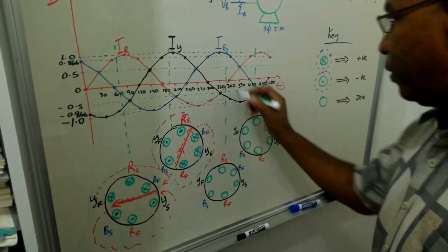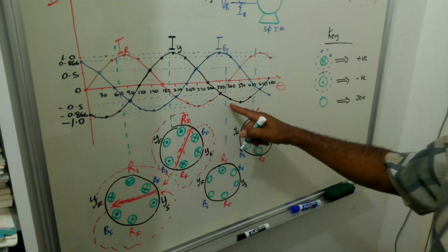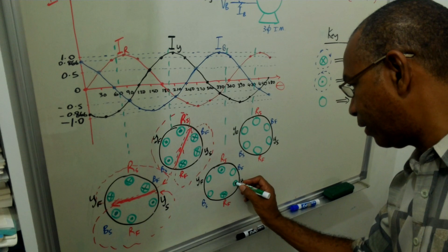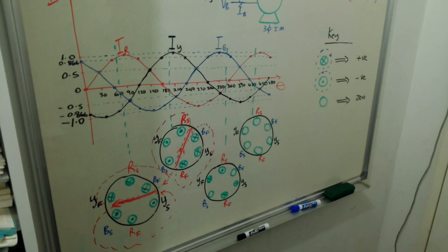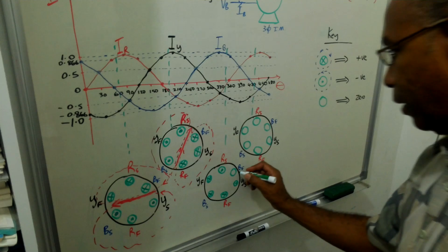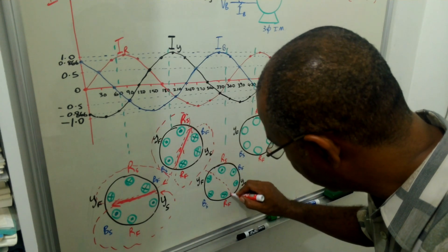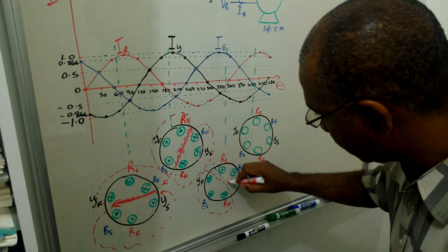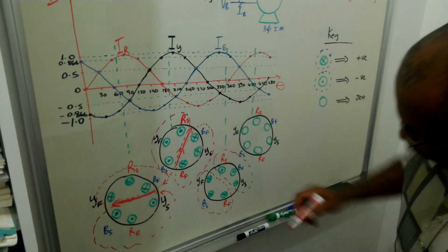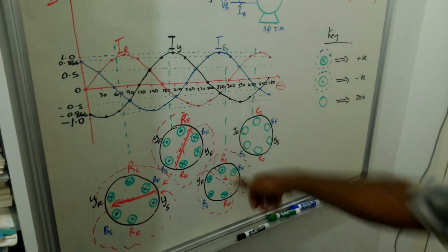At this point, about 350 degrees, red is again negative, which means that the red finish is now positive. Yellow is also negative — yellow start is negative, which means the yellow finish is positive. And blue start is positive, which means the finish would be negative. Notice the orientation again is changing. The magnetic field is now going down here, and here it is going down also.